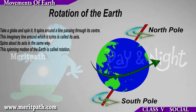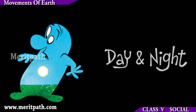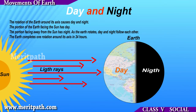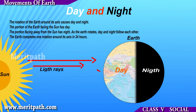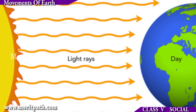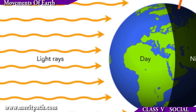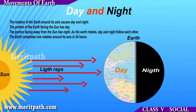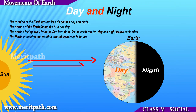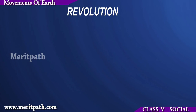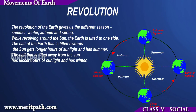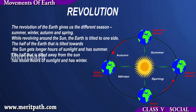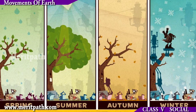Day and Night: The rotation of the earth around its axis causes day and night. The portion of the earth facing the Sun has day, whereas the portion facing away from the Sun has night. As the earth rotates, day and night follow each other. The earth completes one rotation around its axis in 24 hours.